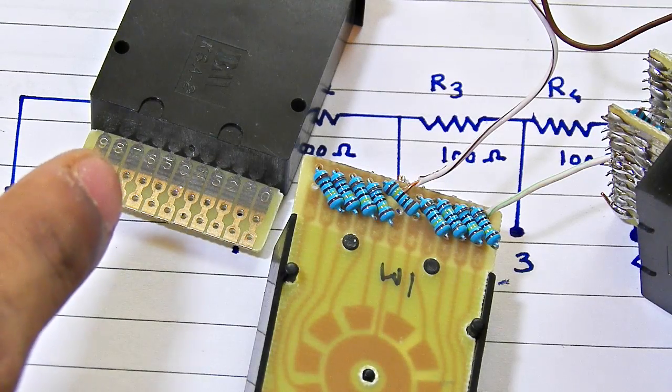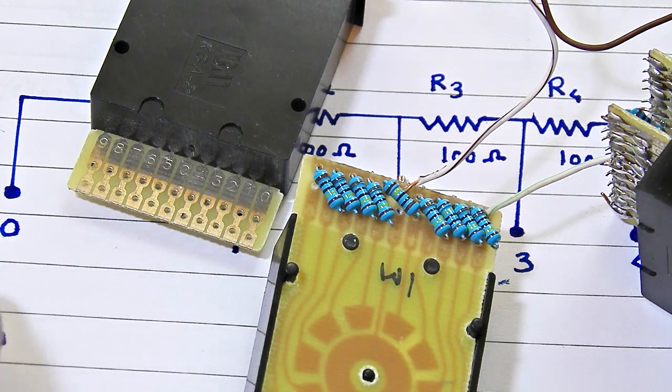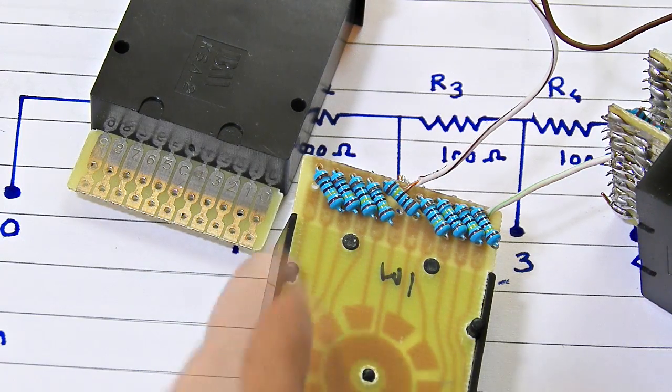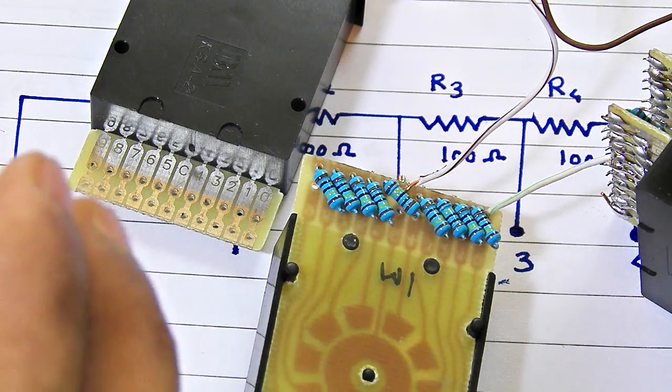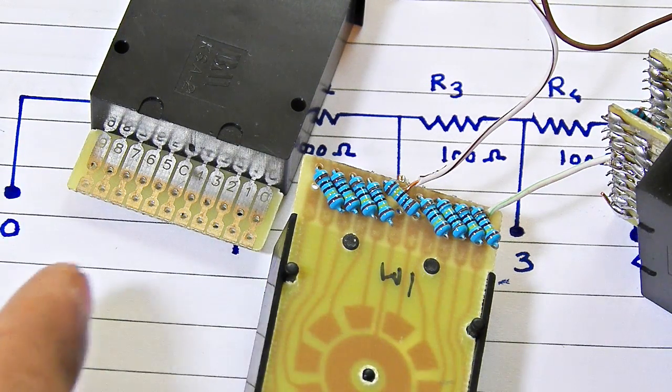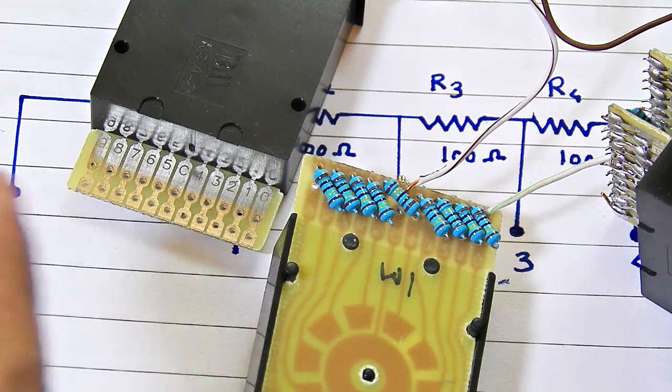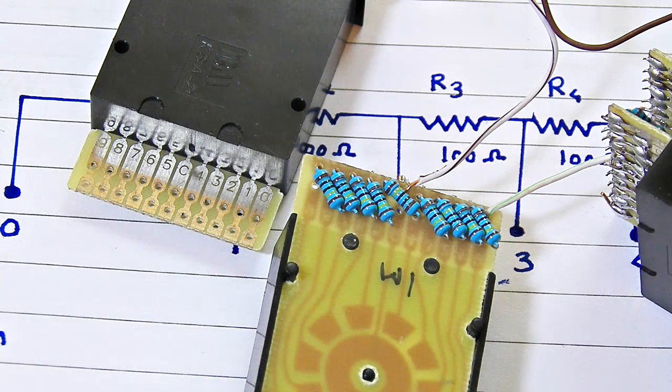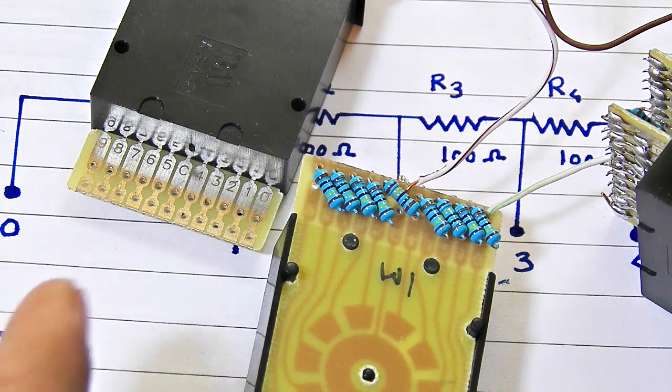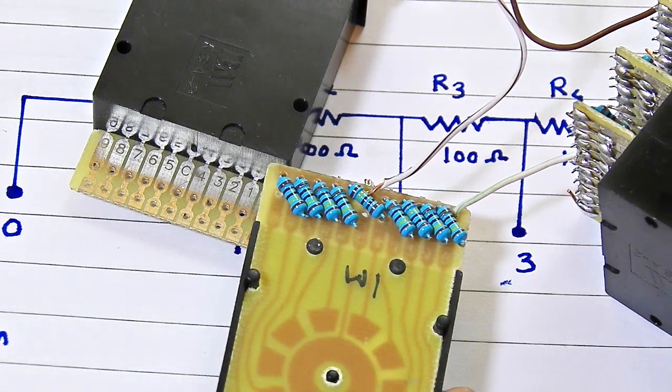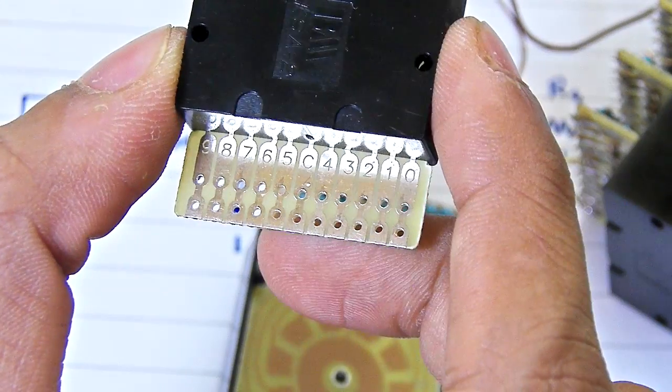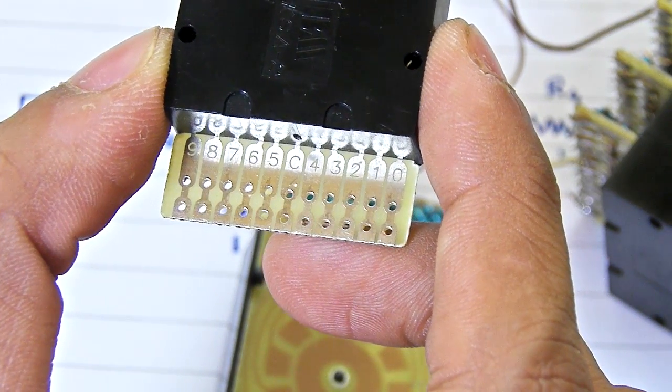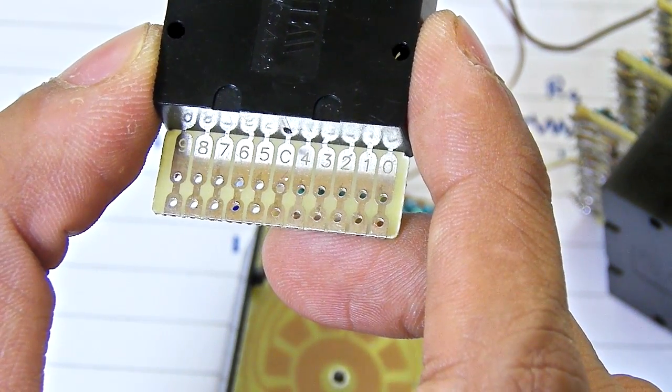Here is the front view of your thumb wheel switch and the back view. What you gonna do here is connect resistance between each of the terminals. That means one and two, two and three, then three and four, and so on. You just keep on going and you will end up with a thumb wheel switch looking like this.